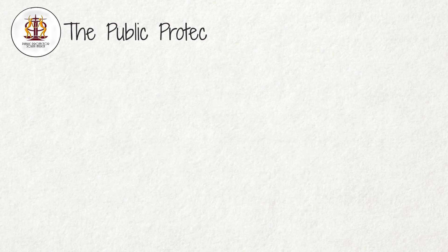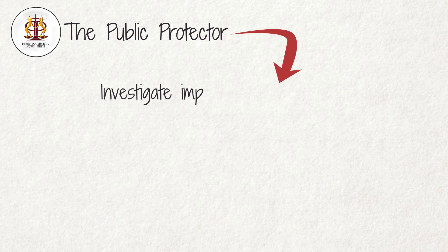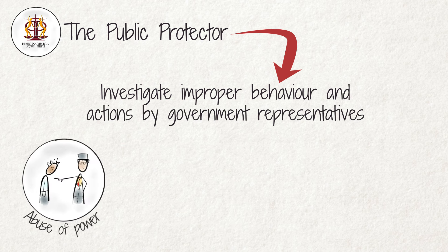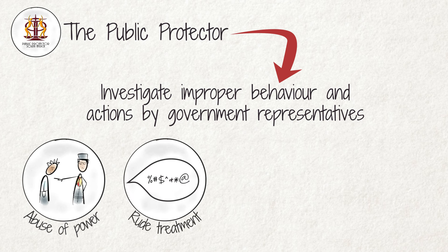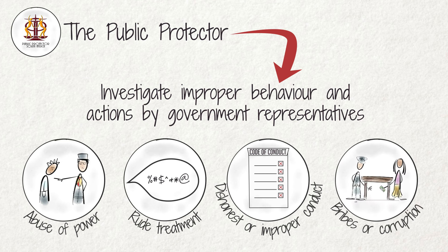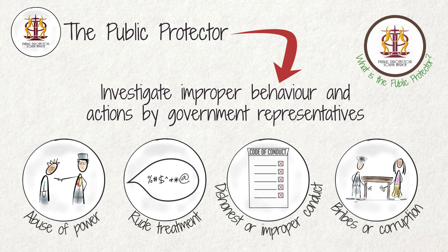The Public Protector. Anyone can ask the Public Protector to investigate improper behaviour or actions by government representatives, abuse of power, rude or favourable treatment of a person, dishonest or improper conduct, or corruption. This is discussed in more detail in the video on the Public Protector.